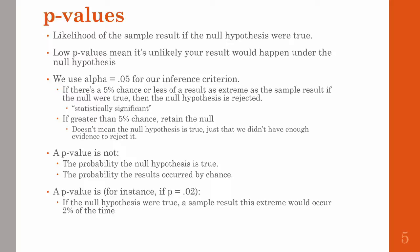The statistic you use to make that decision is a p-value. They're actually a pretty difficult concept to understand. It's the likelihood of the sample result if the null hypothesis were true. So low values mean that it's pretty unlikely that your result would occur under the null hypothesis. We set our alpha criterion to be 0.05 most of the time — so if there's a 5% chance or less of a result being as extreme as the sample result, then we reject the null hypothesis. This is where you get p less than 0.05.